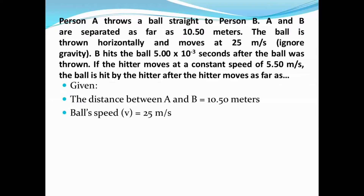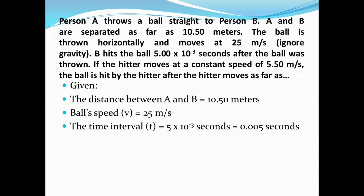Next thing. What is next thing? If both are stationary, the time interval given is 0.005 seconds. It means once the ball was released by A, it took person B this much time to hit the ball. So it was thrown at speed. Hitter speed is 5.5 meters per second.